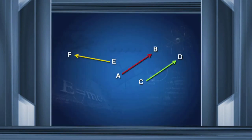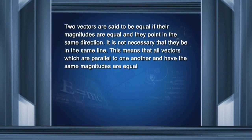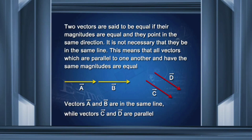I have drawn three vectors. Vectors AB and CD are parallel but have different magnitudes. Vector EF has the same magnitude as vector AB because the length of the line is the same, but its direction is different. Two vectors are said to be equal if their magnitudes are equal and they point in the same direction — it is not necessary that they be in the same line. Vector C equals vector D because they are parallel and equal in magnitude. As long as the magnitude is the same and they point in the same direction, vectors are equal.